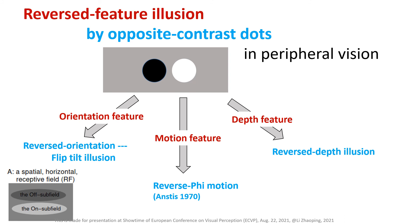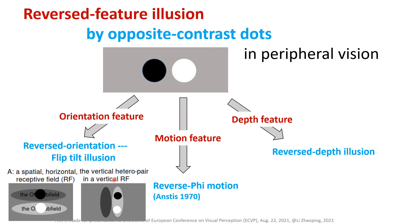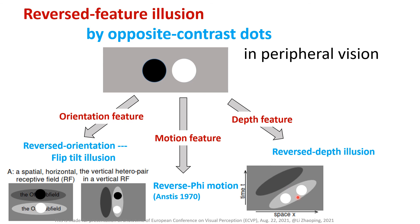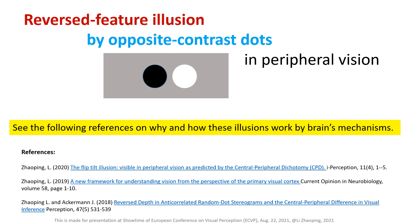These illusions arise from V1 neural responses. For example, this is a spatial receptive field for a simple V1 cell tuned to horizontal orientation with its on and off subfields. A vertically aligned hadal pair can activate this cell very well, but not another cell tuned to vertical orientation, and this gives the flip tilt illusion. Analogously, a cell tuned to motion to the right can also be activated by motion to the left if the dot flips contrast polarity, giving the reverse phi motion illusion. Reverse depth illusion arises analogously from responses of V1 cells tuned to binocular disparity. More details are in these references, which also explain that central vision can overcome these illusions due to top-down feedback, hypothesized as absent or weaker in peripheral vision.